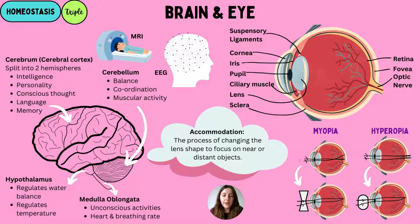The lens is a transparent biconcave structure that helps refract the light to the back of the eye called the retina. The retina contains all the light receptors such as rods and cones, which help us to see. The fovea is a structure at the back of the eye — part of the retina — that contains the cone cells.